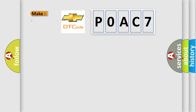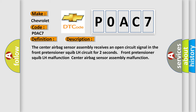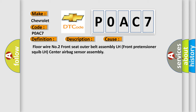So, what does the diagnostic trouble code P0AC7 interpret specifically for Chevrolet car manufacturers? The basic definition is: Open in front pretensioner squib LH circuit. The center airbag sensor assembly receives an open circuit signal in the front pretensioner squib LH circuit for two seconds. Possible causes include: front pretensioner squib LH malfunction, center airbag sensor assembly malfunction. This diagnostic error occurs most often due to issues with: floor wire number two, front seat outer belt assembly LH, front pretensioner squib LH, or the center airbag sensor assembly.